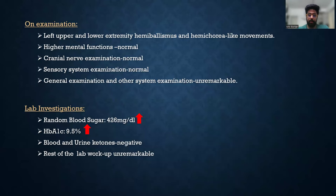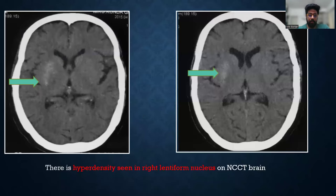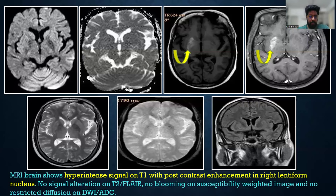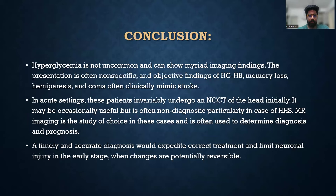On NCCT brain, we saw hyperdensity in the right lentiform nucleus. On MRI brain, we saw hyperintense signal on T1 with post-contrast enhancement in the right lentiform nucleus, no signal alteration on T2 FLAIR, no blooming on FFE, and no restricted diffusion on DWI-ADC.